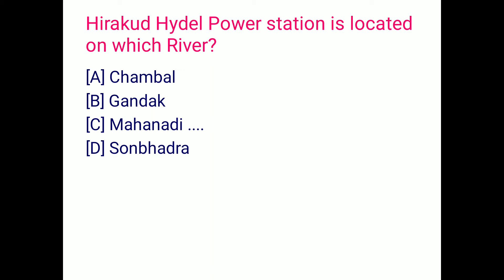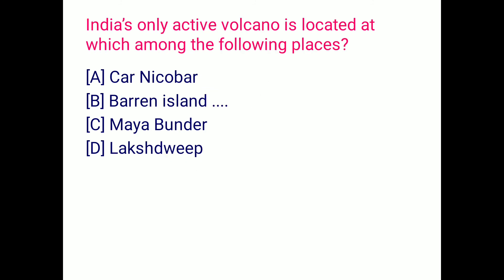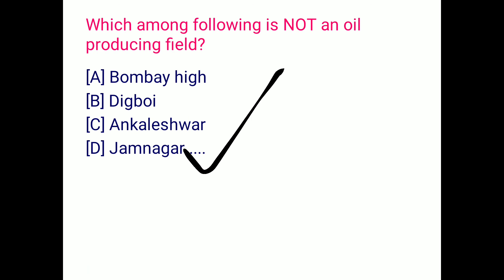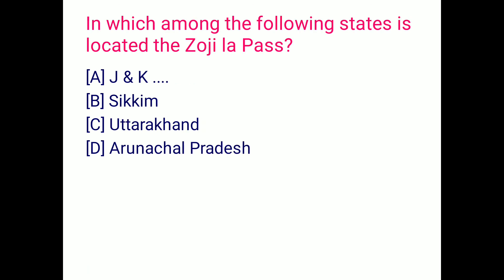Hirakud hydel power station is located on which of the following rivers? That is the Mahanadi; it is located in Odisha. Which among the following is not an oil producing field? The options are Bombay High, Bassein, Kaleshwar, and Jamnagar. The correct answer is Jamnagar — Jamnagar is not an oil producing field, option D.